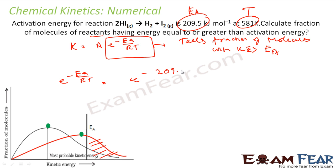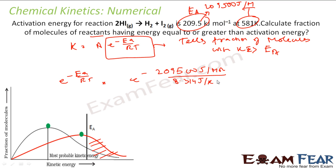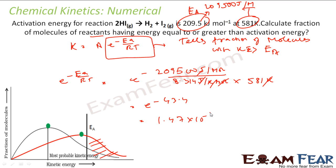So let's find the value of e to the power minus Ea by RT. Plug in: Ea equals 209.5 kilojoules per mole, which converts to 209,500 joules per mole. Divide by R equals 8.314 joules per kelvin per mole, and temperature equals 581 K. Kelvin cancels, mole cancels, joule cancels. This gives e to the power minus 43.4.